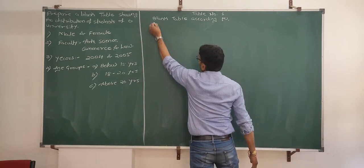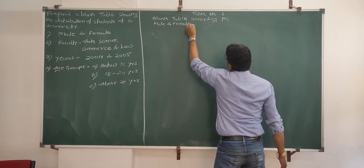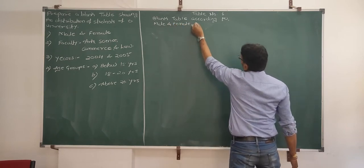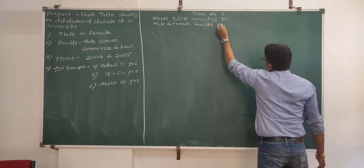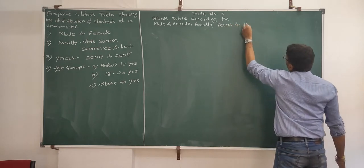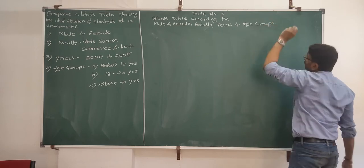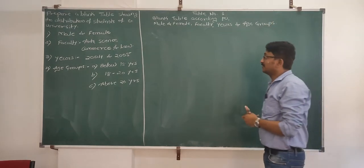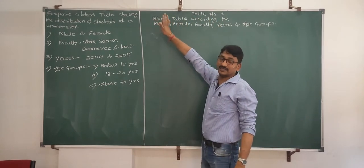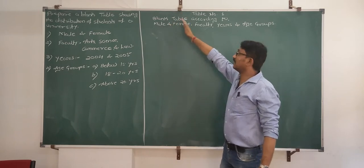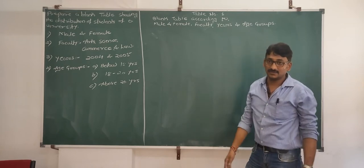I will write in the next line: male and female, faculty, years, and age group. So the first step is to write the number of the table, then what we are going to prepare — whether it is a blank or statistical table — and then write the information this blank table is based on, on the next line.